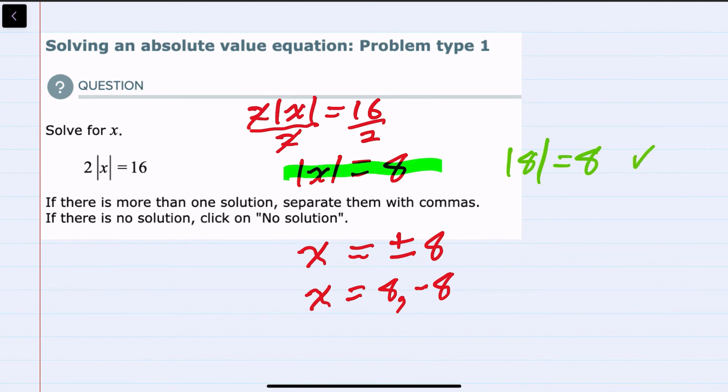that would be true because the absolute value makes what's inside positive. And so making an 8 positive would be a positive 8.